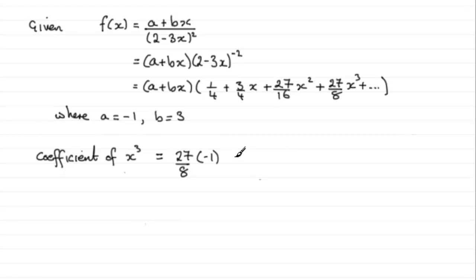And then for another x cubed term it's going to come from timesing bx with the 27 sixteenths x squared. So you're going to get plus 27 sixteenths multiplied by the b. And we've seen that b was 3.